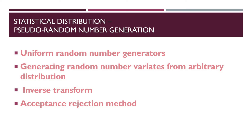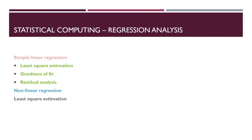Chapter 3 is regression analysis. Statistical computing is related to data and probability, and can be implemented in Python — it is very useful for machine learning and data analysis. If you already know Python, you can relate these concepts to your existing knowledge. We will discuss simple linear regression.